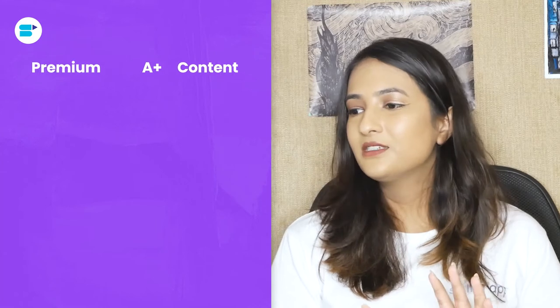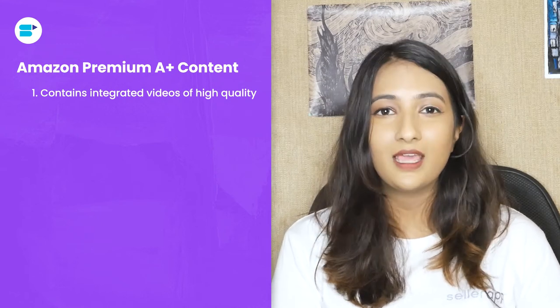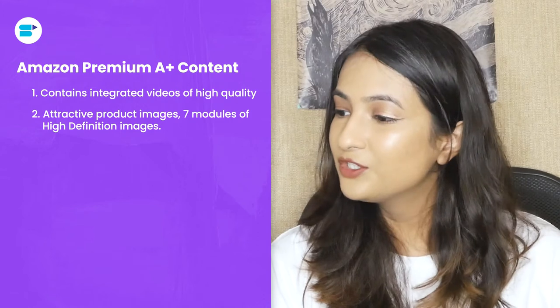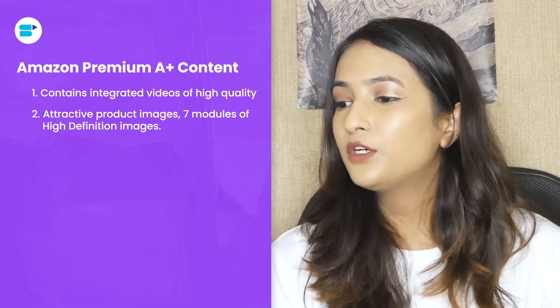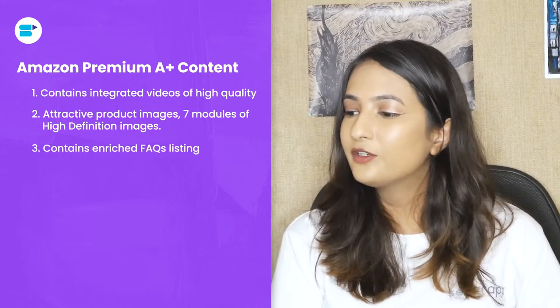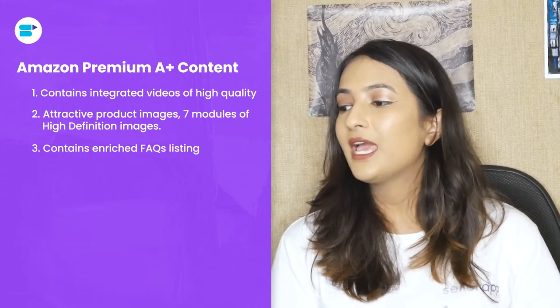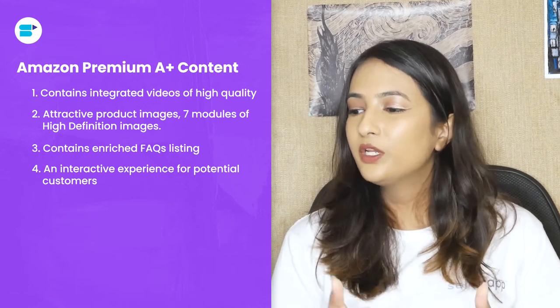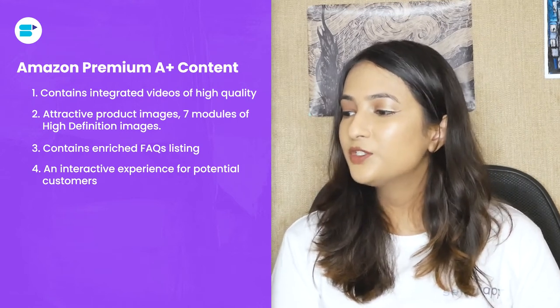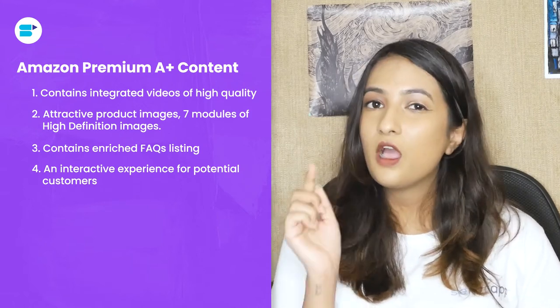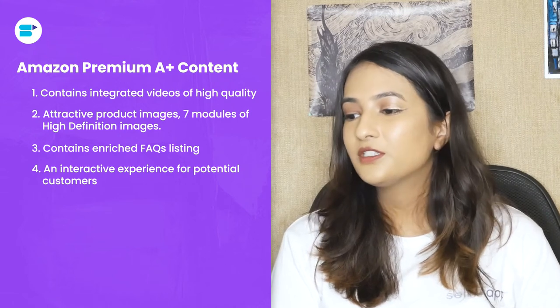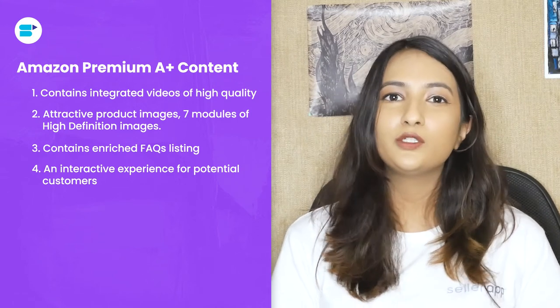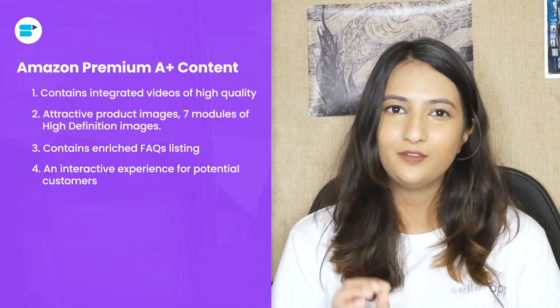What makes Amazon Premium A-plus content unique? First, it contains integrated videos of high quality — 720p — and the video can be up to three minutes long. Second, you can add attractive product images and visuals, including seven modules of high-definition images. Third, it contains enriched FAQs to clear confusion and increase trust with an engaging layout. Fourth, and probably the most interesting, you can provide interactive experience options for potential customers like hotspot modules, which respond when customers hover over product features, and carousel modules to help them scroll through easily.